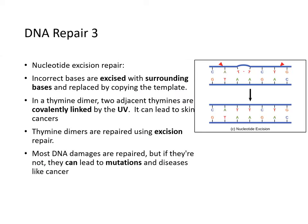Sometimes, if you have thymine next to another thymine and it is exposed to UV light, those two thymine pairs form a covalent bond — called thymine dimers. Thymine dimers are repaired using a special process called nucleotide excision repair, where the surrounding sequences are cut out along with the mistake and the whole region is replaced. Most DNA damage is repaired, but if it is not, it can lead to mutations and diseases like cancer.